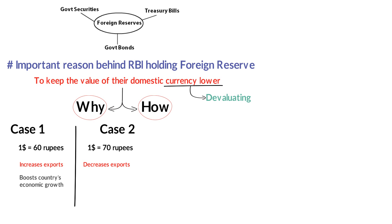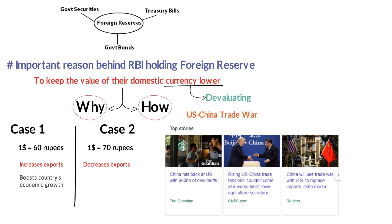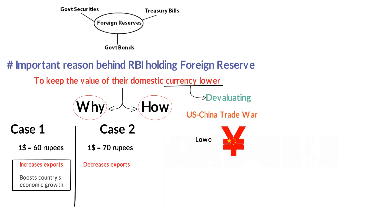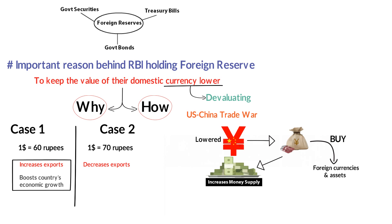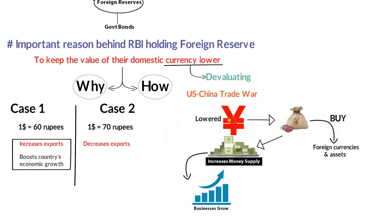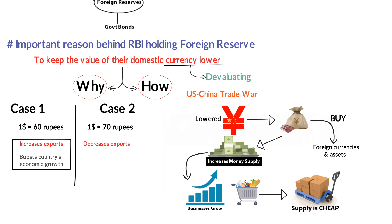Now let's address the 'how.' You may have seen news about the trade war between China and the United States, where China used currency devaluation as a strategy — basically manipulation. The Chinese lowered the value of their currency, the Chinese Yuan, by printing lots of it. When a country prints more of its own currency, it increases the money supply in the domestic market. When people get more money, businesses thrive, consumption increases, and by demand-and-supply logic, supply increases at a lower price. This is what attracted the United States to import more Chinese goods.